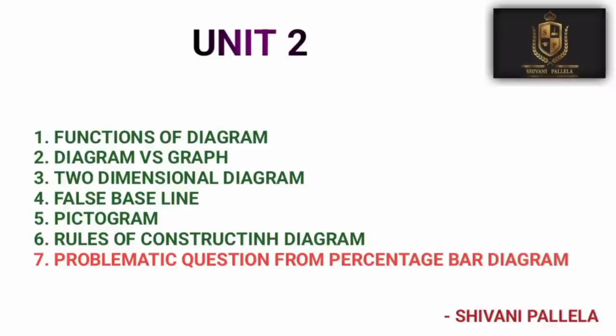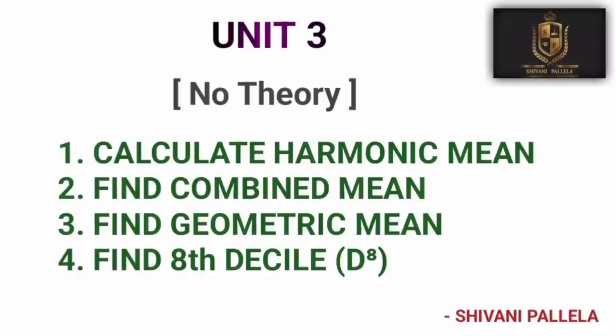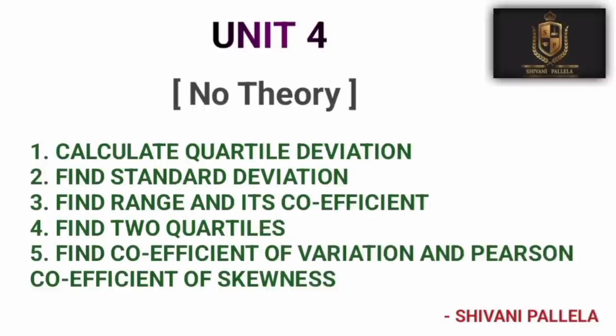In Unit 2, 'Diagram versus Graph' is the most important question, and 'Functions of Diagram' is also most important. For the problematic question in Part A, there's a chance of a Percentage Bar Diagram question for 4 marks. Coming to Unit 3, there is no theory question for short answers, but there will be a compulsory problematic question — either Harmonic Mean, Combined Mean, 8th Decile, 7th Decile, Deciles, or Geometric Mean. Definitely one of these will come in Part A for 4 marks — just remember the formulas.